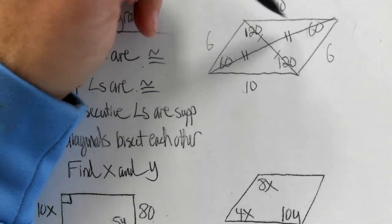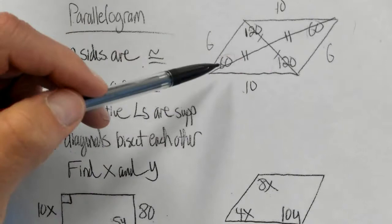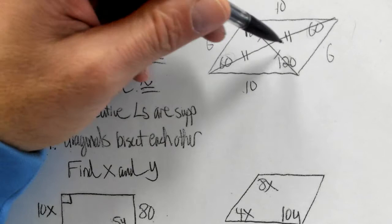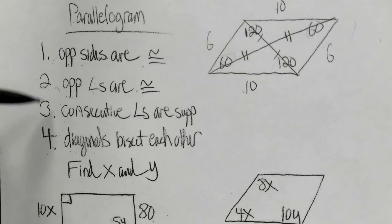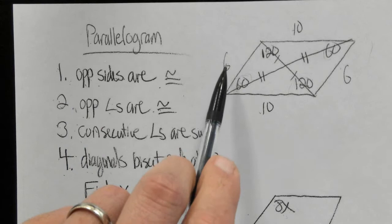And the fourth property: the diagonals bisect each other — they cut each other in half. So if this diagonal segment is 5, the other half is 5; if one is 8, the other is 8. So these are the four properties of parallelograms: opposite sides are congruent, opposite angles are congruent, consecutive angles are supplementary, and the diagonals bisect each other.